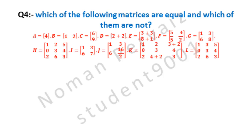Matrix I is 1, 3, 6 and 7. Matrix J is 1, 3, 6 and 16 by 2. Matrix K is 1, 2, 3 plus 2, 0, 3, 4, 2, 4 plus 2 and 3. Matrix L is 1, 3, 5, 0, 3, 4, 2, 6 and 3.